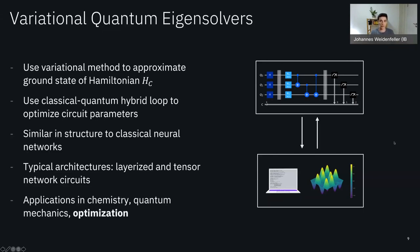The choice of trial state is extremely important for this method to work. There are a number of different variational forms, and techniques like layerized or tensor network circuits appear in many of them — we'll see that QAOA is also a layerized variational form. In general, we can use the VQE whenever we want to find the ground state of a Hamiltonian, giving it applications in chemistry and quantum mechanics. We can also use it for optimization: if we encode an optimization problem as a Hamiltonian whose ground state corresponds to the optimal solution, we can then use the VQE to find that solution. This is the idea at the heart of QAOA.